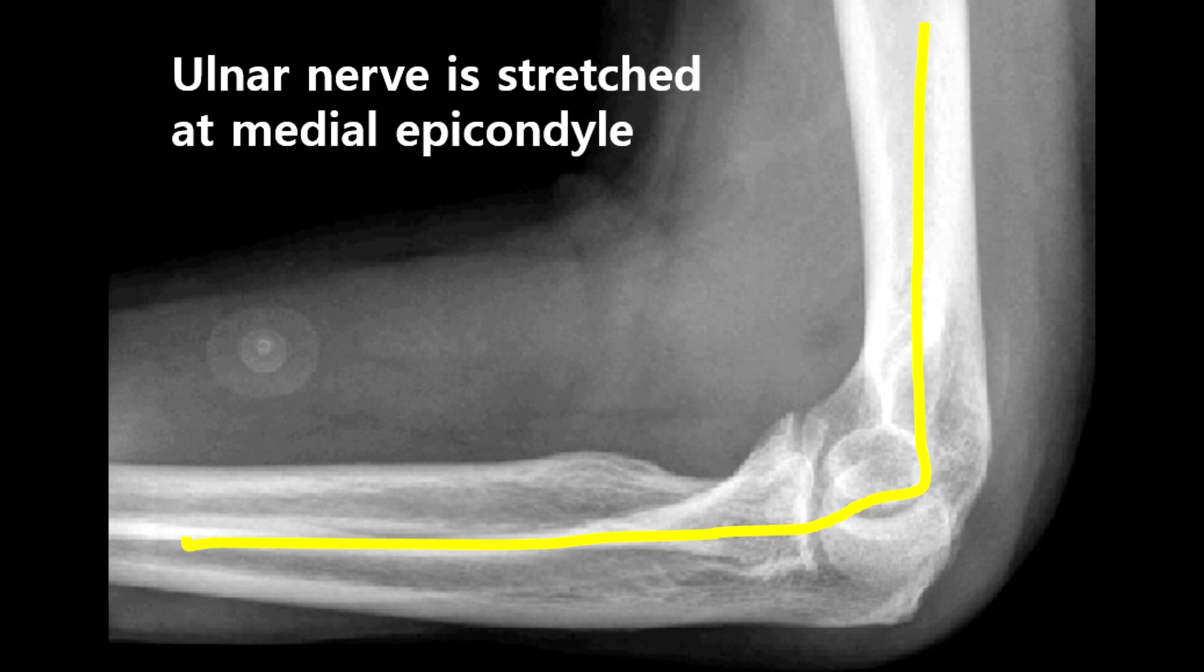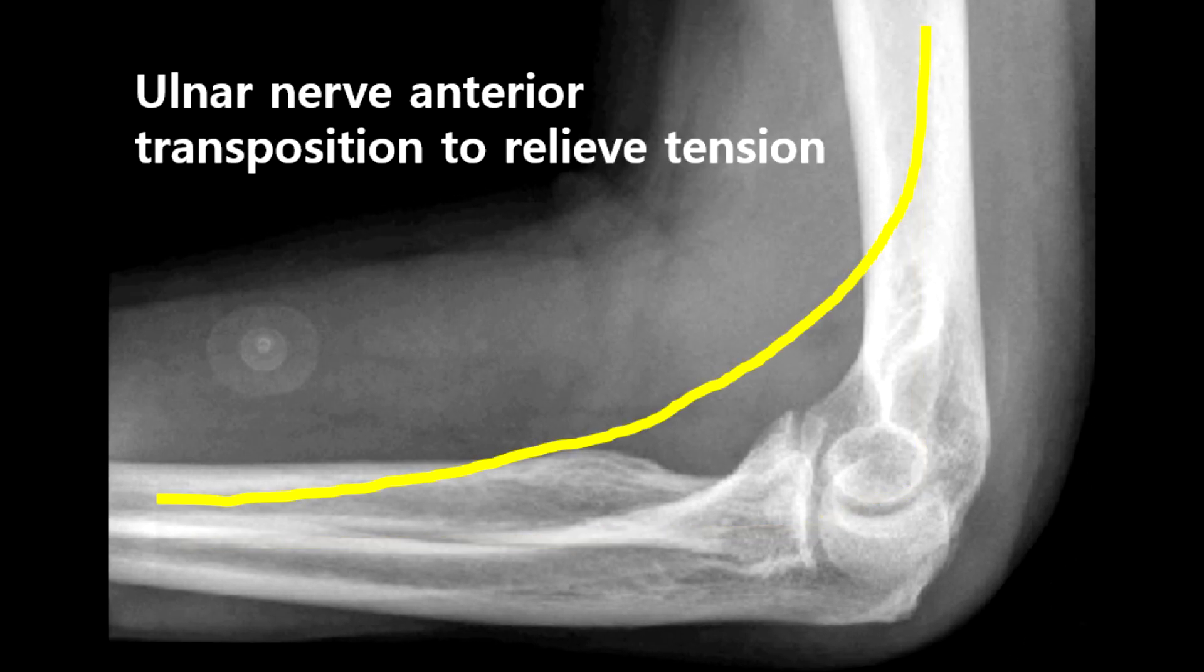Ulnar nerve anterior transposition is performed. Ulnar nerve is usually trapped when elbow is flexed. Anterior transposition of ulnar nerve relieves tension.